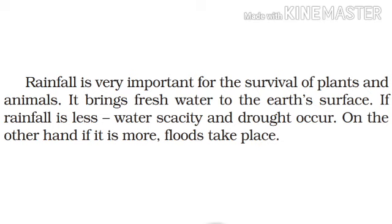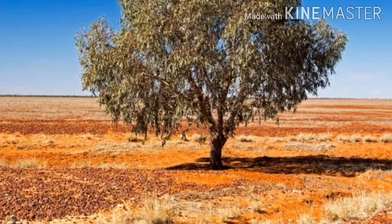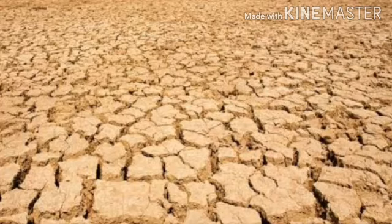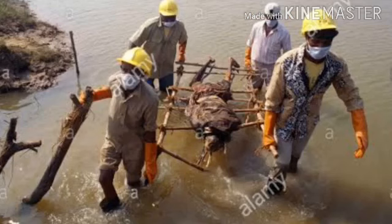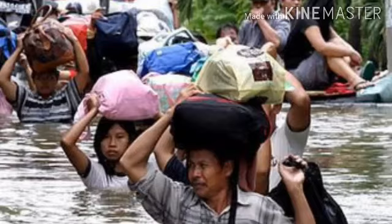Rainfall is very important for the survival of plants, trees, and all living creatures. Rainfall brings fresh water to the earth's surface, so rain water is always considered pure. If rainfall is less, water scarcity and droughts occur, so we should always plant more trees. On the other hand, if rainfall is excessive, floods take place. Thus, too much rainfall brings floods and too little brings drought.